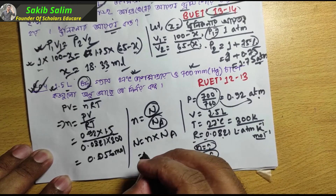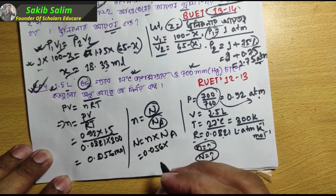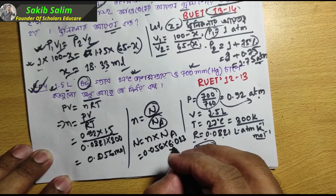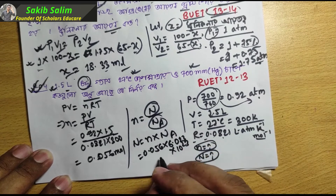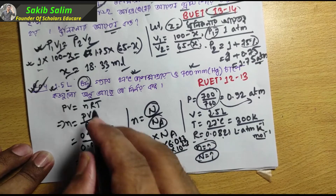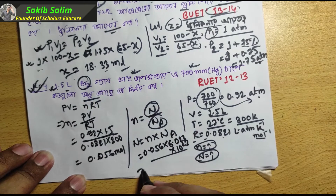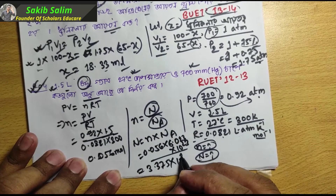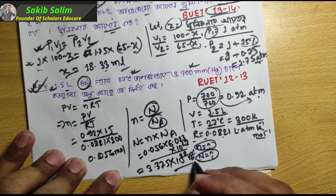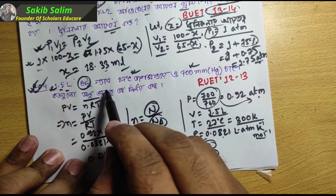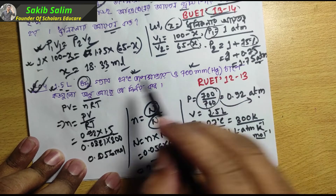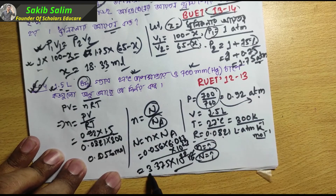This is the value: 0.056 multiplied by Avogadro's number, which is 0.6023 into 10 to the power 23. This gives us the calculation for bromine gas: 3.375 into 10 to the power 22. So, 1.5 liters of bromine gas corresponds to 600 milliliters of mercury, which equals 3.375 into 10 to the power 22.